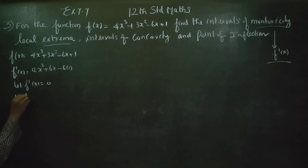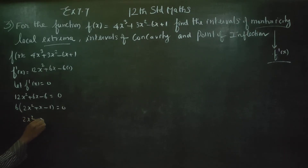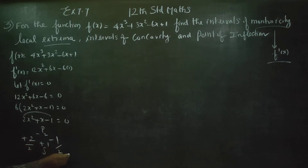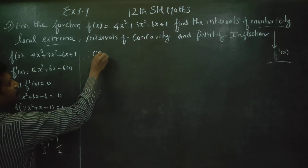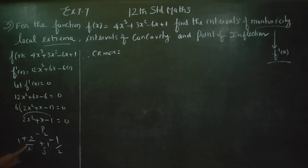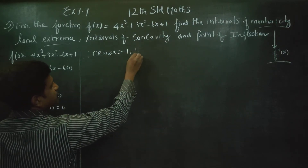So 12x² + 6x - 6 = 0, which simplifies to 2x² + x - 1 = 0. Breaking it: (2x - 1)(x + 1) = 0. Therefore the critical numbers are x = -1 and x = 1/2.